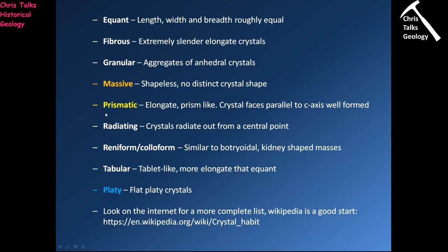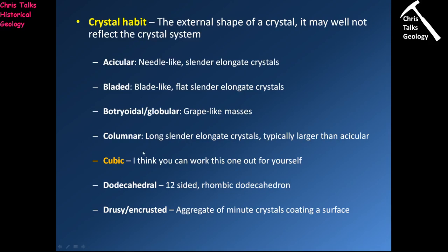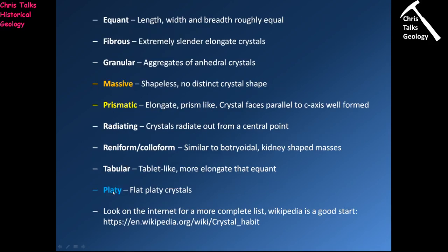Prismatic crystals are elongate — long and sometimes slender, sometimes a bit chunkier. Platy crystals have an almost book-like appearance, made up of lots of individual flat layers. So the four main crystal habits are: cubic, massive, prismatic and platy.